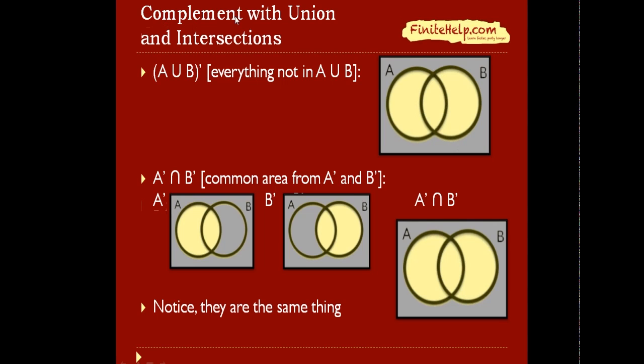Here we're going to talk about complement with unions and intersections. So first, we're going to do A union B complement, which is everything that's not in A union B. So as you learned, the area here is A union B. So everything that's not in A union B would be this shaded area outside here.